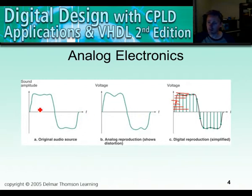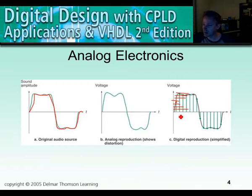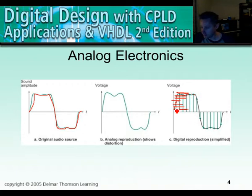Here's another example: an analog wave from an audio source. You can see it being sampled by an analog-to-digital converter. The lines on the screen represent discrete steps — quantization, in other words. So if we have an analog-to-digital converter that has 1, 2, 3, 4, 5, 6, 7, 8 levels.